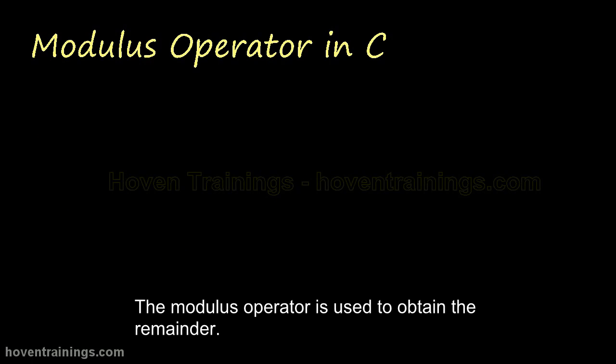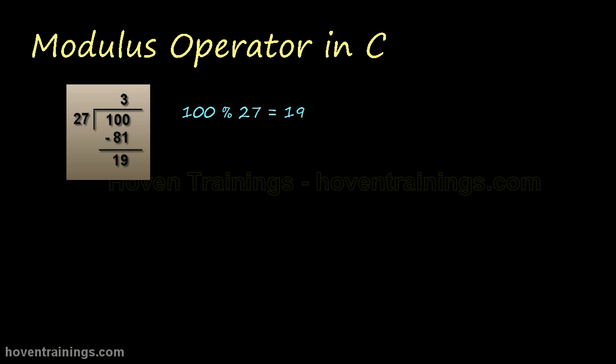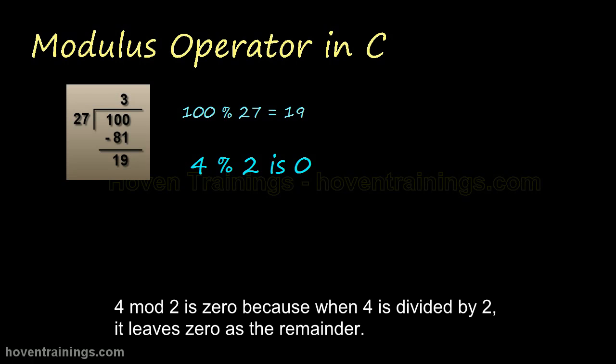The modulus operator is used to obtain the remainder. When 100 is divided by 27, it leaves 19 as the remainder. So 100 mod 27 is 19. Take this example: 4 mod 2 is 0 because when 4 is divided by 2, it leaves 0 as the remainder.